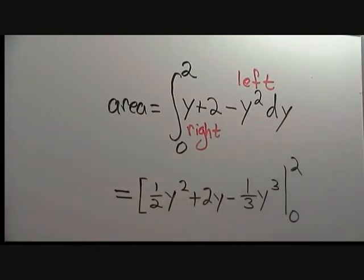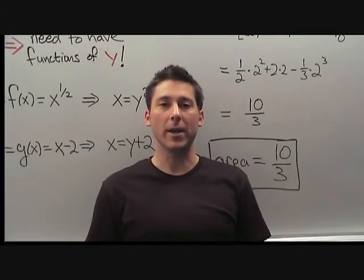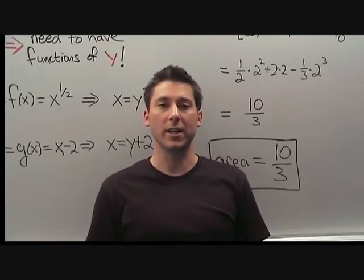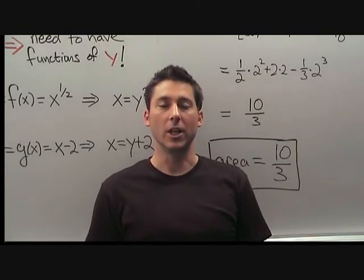To compute the integral, we anti-differentiate this expression, which gives us one half y squared plus 2y minus one third y cubed. And we are going to evaluate that between 0 and 2. We plug in the upper limit and the lower limit of integration and take the difference. The lower limit is 0, which gives 0.